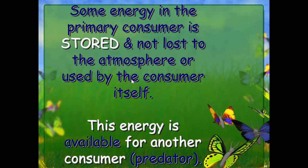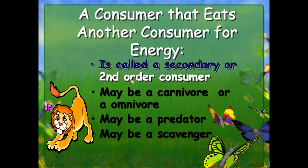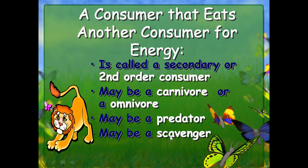The energy that is stored is available for other consumers — a predator. Just like the giraffe got energy from the plant, another consumer can get energy from this consumer if it eats the other animal. A consumer that eats another consumer is called a secondary or second order consumer. They may be a carnivore — an organism that only eats meat — or an omnivore, like humans, who can eat plants and animals.